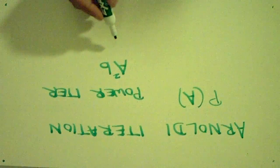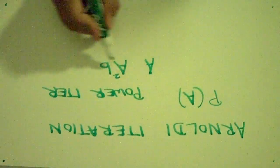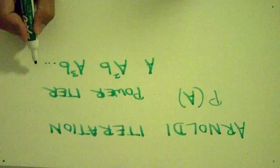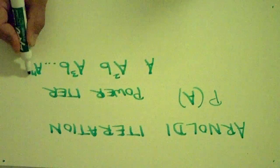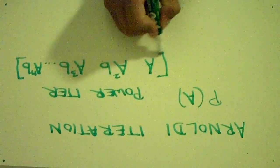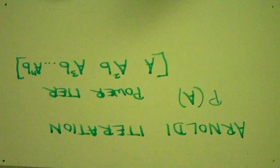You again multiply this by A on the front, and you get A cubed B. And you continue the procedure until you get A to the n B. And A to the n B will converge to the largest eigenvector of the matrix A.